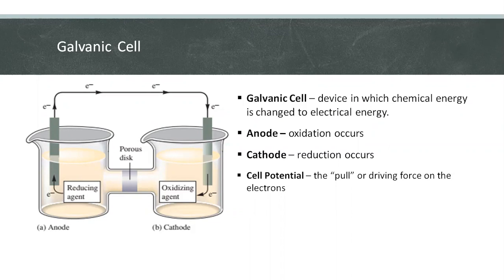It's also called electromotive force or EMF, or voltage. The unit for cell potential or EMF or voltage is volt, where one volt is equivalent to one joule per coulomb.